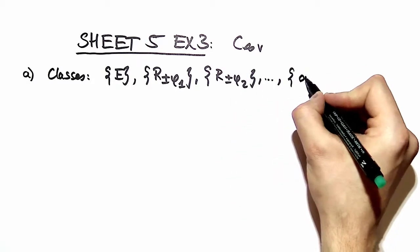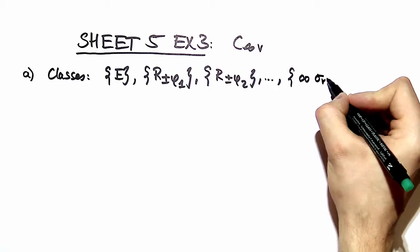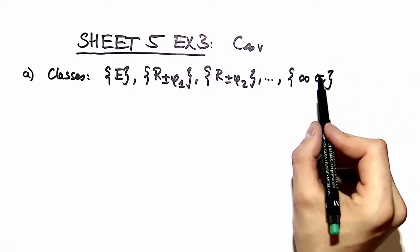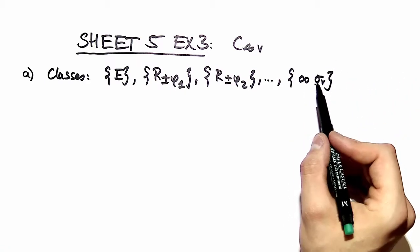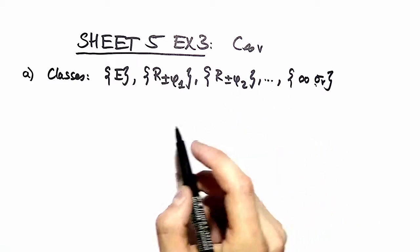Then you have all reflection planes in the same conjugacy class because the different reflection planes can be brought into each other by the rotations.